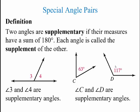Piggybacking off that, two angles are supplementary if their measures have a sum of 180 degrees; each angle is called the supplement of the other. For example, we have a horizontal line, and angles 3 and 4 added together give 180 degrees. Similarly, angle C of 63 degrees and angle D of 117 degrees add together to get 180, so angles C and D are supplementary angles.